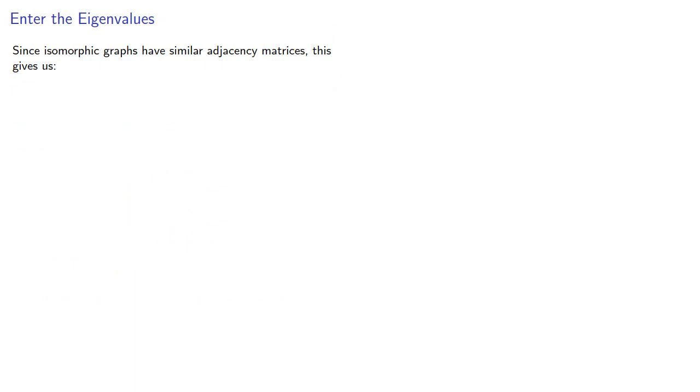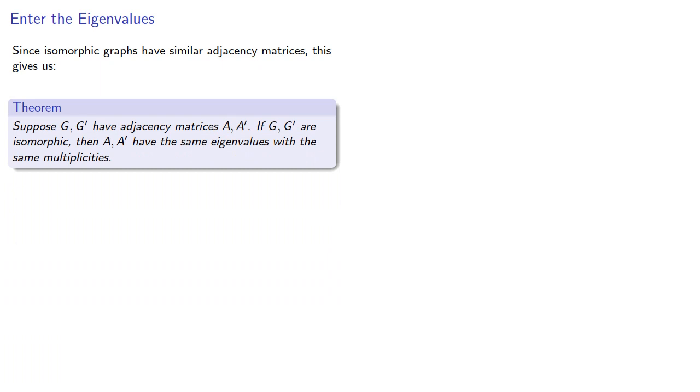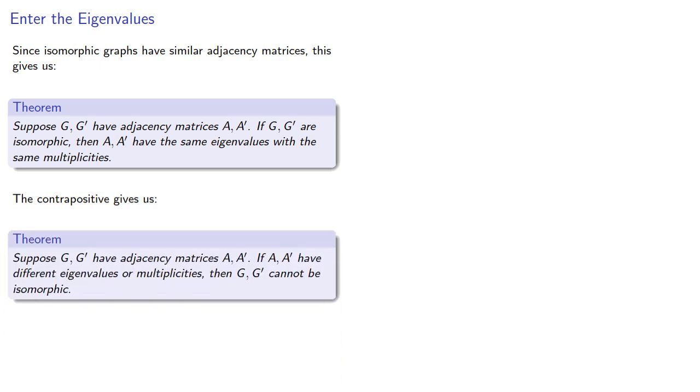Since isomorphic graphs have similar adjacency matrices, this gives us the following result: If two graphs are isomorphic, their adjacency matrices have the same eigenvalues with the same multiplicities. The contrapositive then tells us that if there is a difference in the eigenvalues or multiplicities, then the graphs cannot be isomorphic.